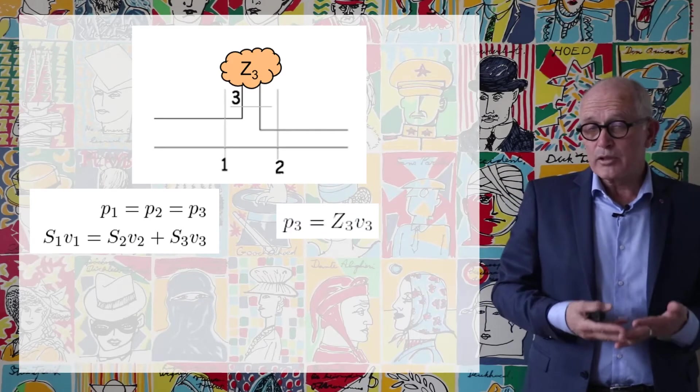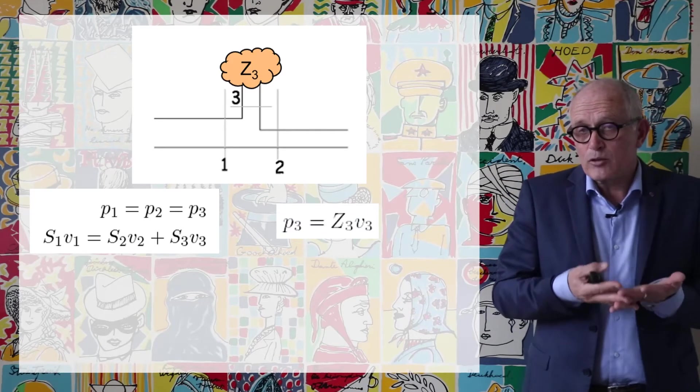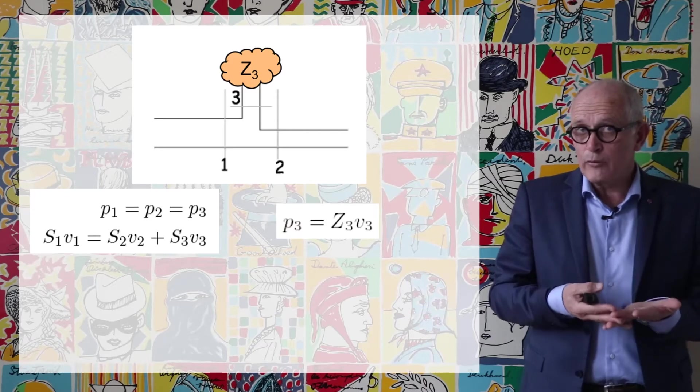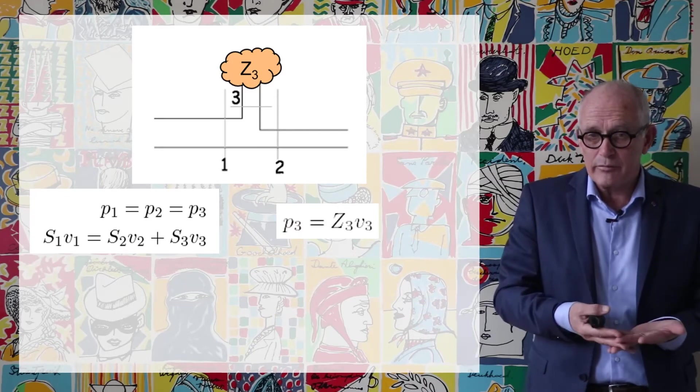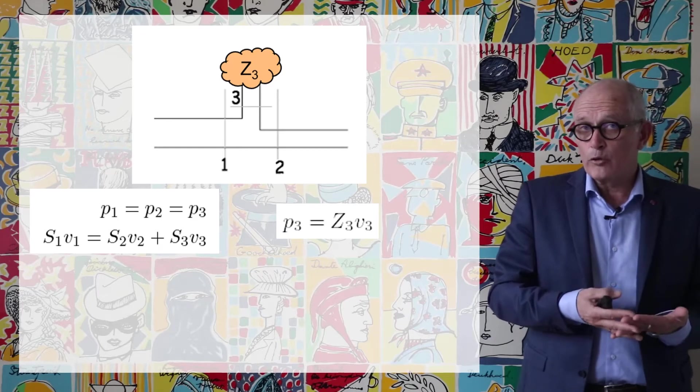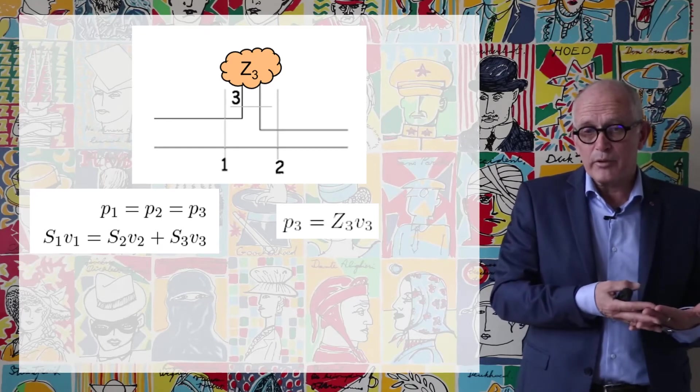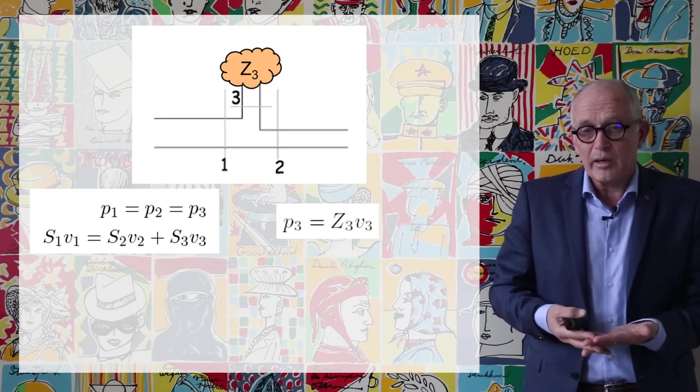But there's one more equation. I said that what is behind cross-section 3 has a certain impedance Z3 that is given and so I have another relationship which is that P3 is equal to Z3 times V3.